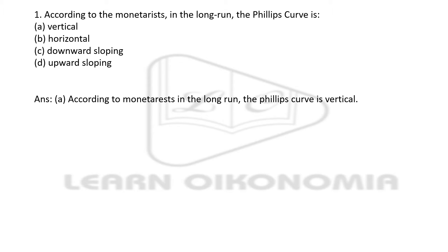The first question: according to the monetarists, in the long run, the Phillips curve is in which shape? Options are vertical, horizontal, downward sloping, or upward sloping. The right answer is option A — the long-run Phillips curve, as per the monetarists, is vertical in its shape.